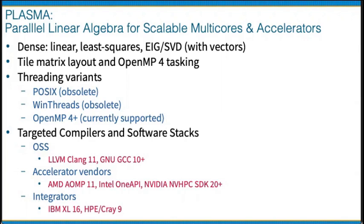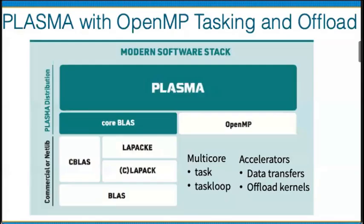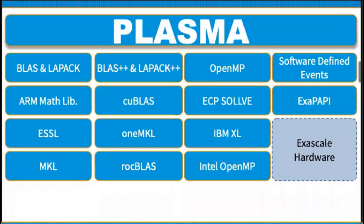Accelerator vendors provide OpenMP for tasking and offload, including AMD AOMP 11 compiler, Intel OneAPI compiler suite, and NVIDIA HPC SDK starting with version 20, as well as hardware integrators such as IBM with their XL16 compilers and HPE and Cray starting with compiler version 9. The PLASMA software stack is based on open standards such as CoreBLAS, CBLAS, LAPACK-E, CLAPACK, and BLAS. OpenMP is used to target multi-core CPUs with task and task loop constructs, and accelerators with offload directives for data transfers and offload kernels.